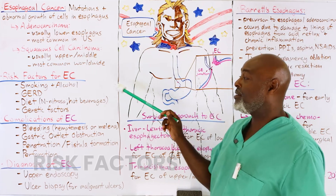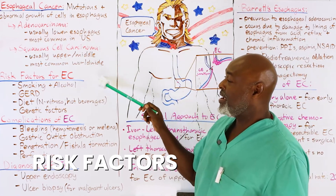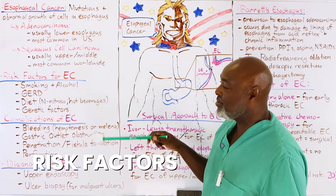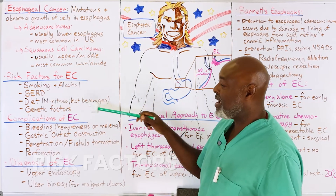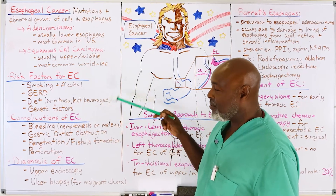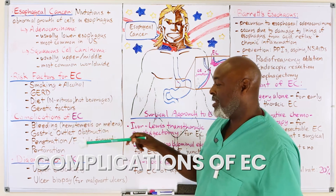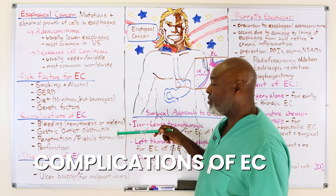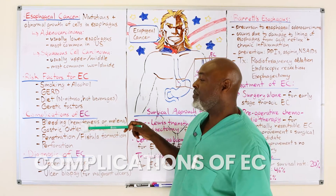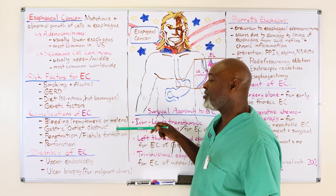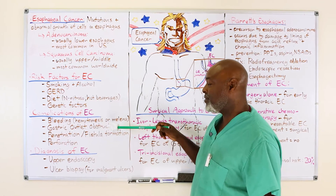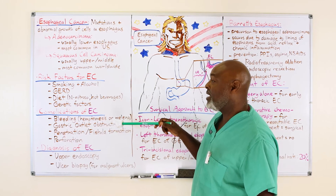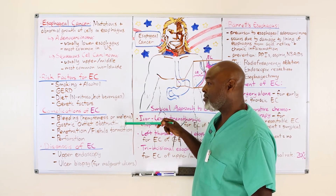Risk factors for esophageal cancer include smoking, alcohol, reflux, diet, and genetic factors — same as with ulcers. Complications include bleeding, perforation, penetration, fistula formation, and outlet obstruction. You will really get esophageal obstruction, not gastric outlet obstruction, but esophageal obstruction due to a mass in the esophagus that is usually cancer.